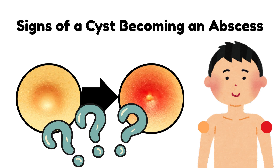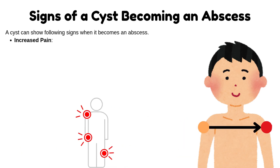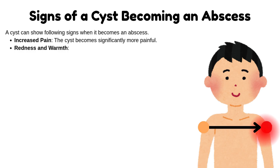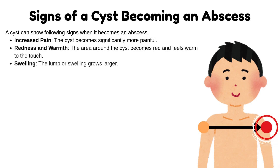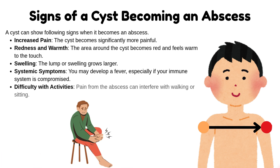What are the signs of a cyst becoming an abscess? A cyst can show the following signs when it becomes an abscess: increased pain, as the cyst becomes significantly more painful; redness and warmth, as the area around the cyst becomes red and feels warm to the touch; swelling, as the lump grows larger; systemic symptoms such as fever, especially if your immune system is compromised; and difficulty with activities, as pain from the abscess can interfere with walking or sitting.